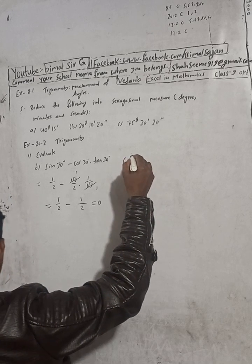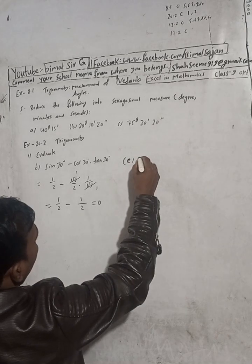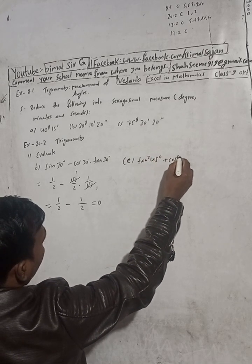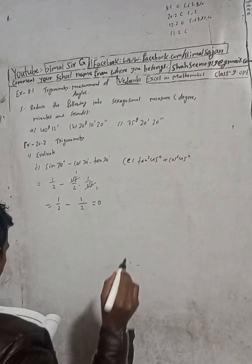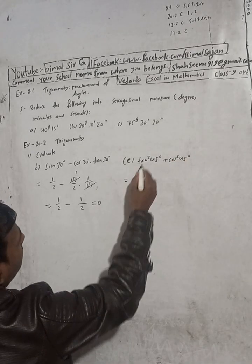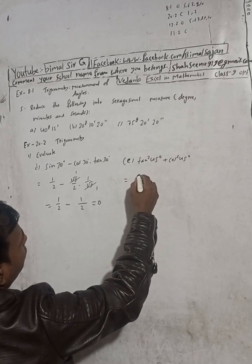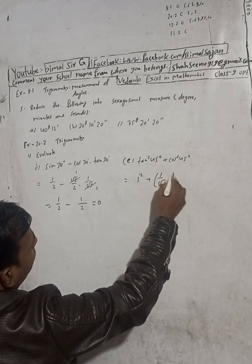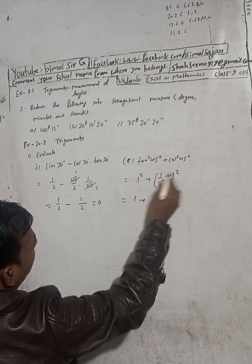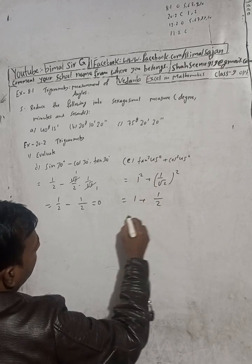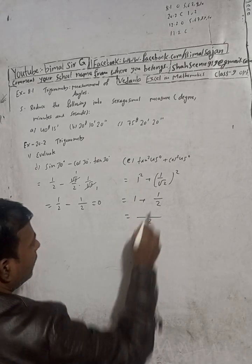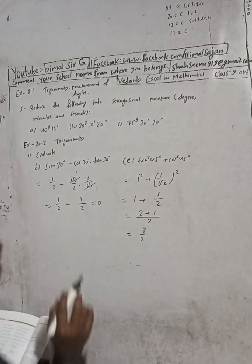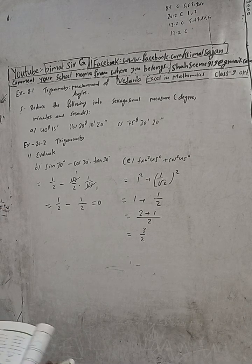tan squared 45 degrees plus cos squared 45 degrees — tan 45 value is 1, so 1 squared is 1. cos 45 is 1 by root 2, and squared gives 1 by 2. So 1 plus 1 by 2 equals 3 by 2. The answer is 3 by 2.